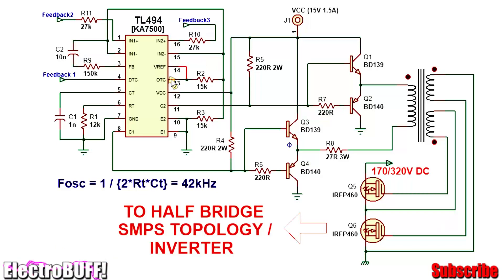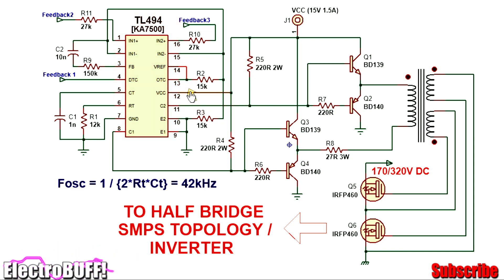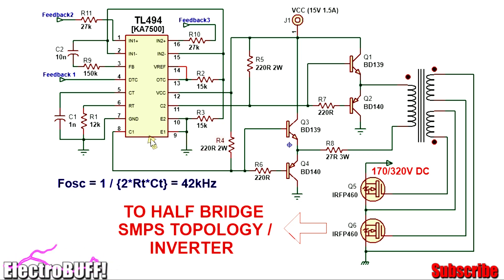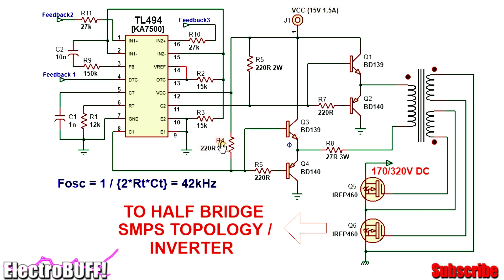To set the output drive transistors as a push-pull driver, you also need to pull the output control pin high to 5 volts by connecting it to pin 14. Pin 12 is VCC and pin 7 is ground as shown. The open collectors are pin 8 and 11, and the emitters are pins 9 and 10 which are pulled down to ground. The open collectors are pulled up to VCC — which will be at least 15 volts and 1.5 amperes — by 220 ohm resistors as shown.